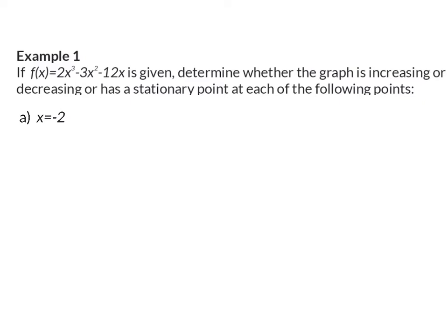Example one. If f is given, determine whether the graph is increasing or decreasing, or has a stationary point at each of the following points, and the first point given is x is equal to minus two. We already know that increasing, decreasing, and stationary points are determined using the derivative, so we are going to start off determining the derivative of this given function. This can be done using our differentiation rules, and then we will have 6x squared minus 6x minus 12.